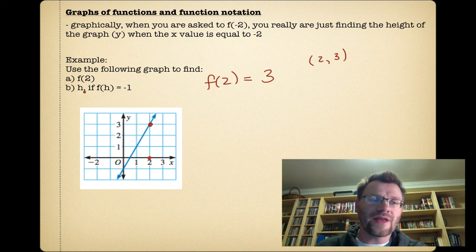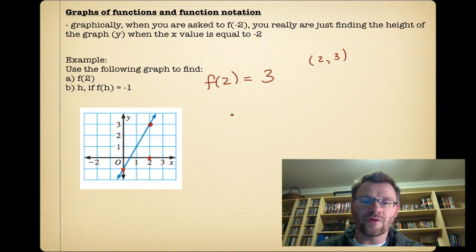Our second one says find h if f(h) is equal to -1. Well, right now when they say f of something, they're giving you the height. So the height is at -1. There's only one point where the height is -1, and that is at an h value of 0. So if f(h) is equal to -1, then h is equal to 0. So that point that we're talking about is (0, -1).